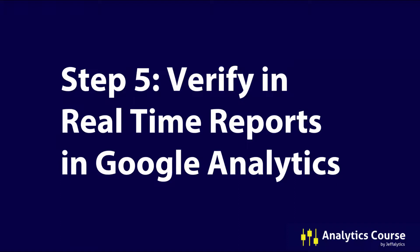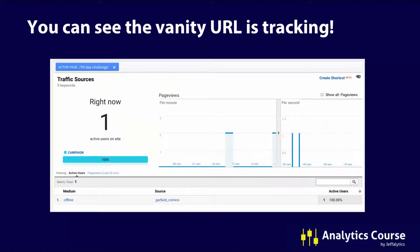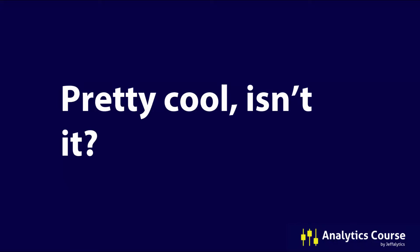Step five: verify in your real-time reports in Google Analytics that everything is working. I went into the real-time report and typed in jefflytics.com/youtubers, and it confirmed the visit was coming from offline via the Garfield comics campaign. You can click the link too — it will show up as coming from the Garfield comics, which confirms you're following along. The real-time report is great for testing so you don't have to worry if this is a new concept.